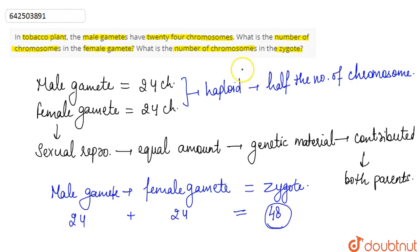So the answer for the number of chromosomes in the zygote will be 48 because zygote is basically diploid in nature.